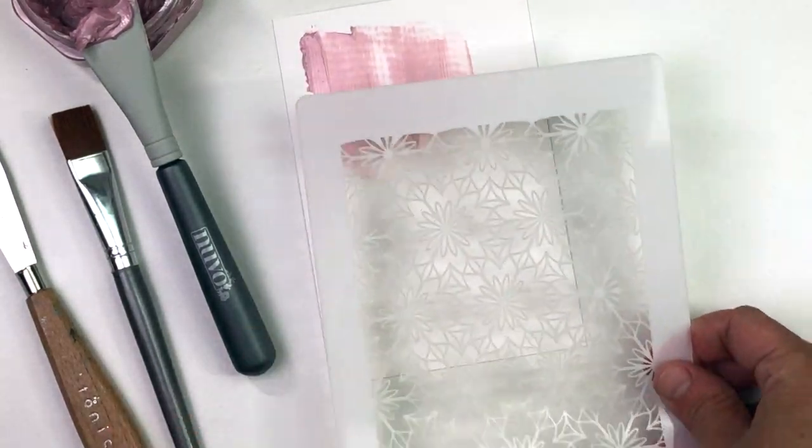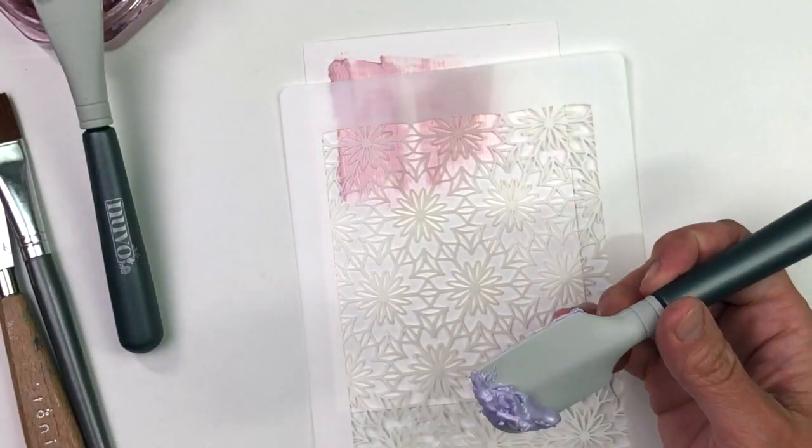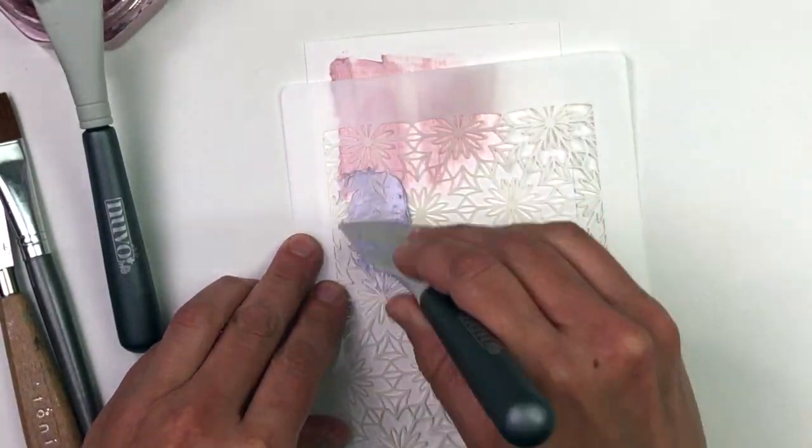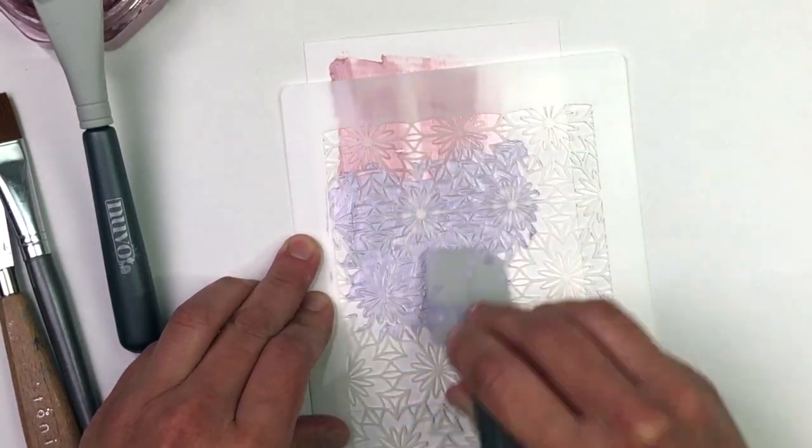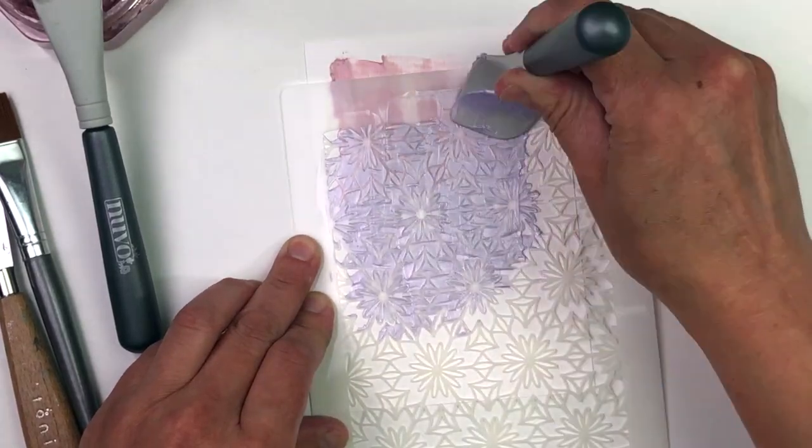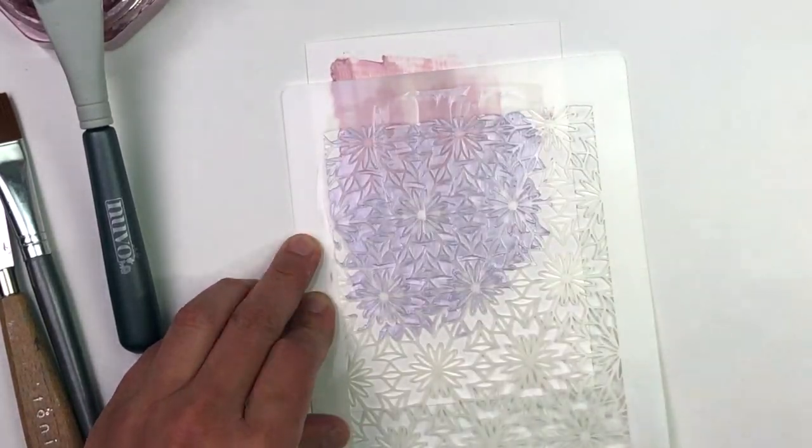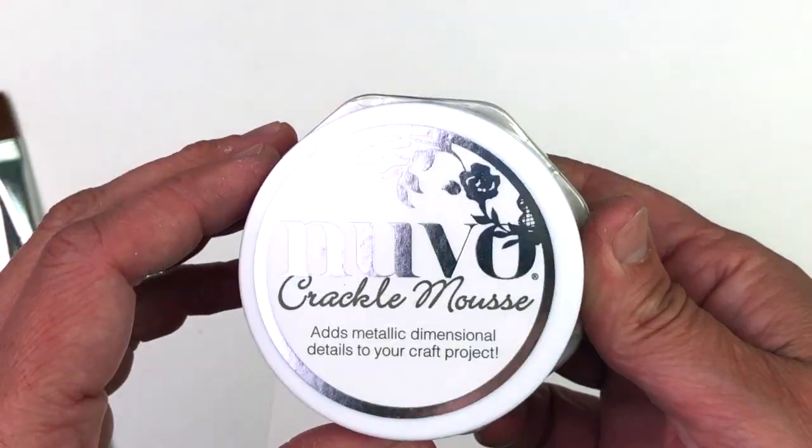You can also use these spatulas with stencils. So you just saw one of the two spatulas, and this is the second one, they're just different shaped heads, and they're both very easy to use for applying the crackle mousse. So this time I'm just applying it over a stencil. And let's take a look at what that's going to look like when I pull the stencil up. There we go. And you can see that these mousses stencil very well.